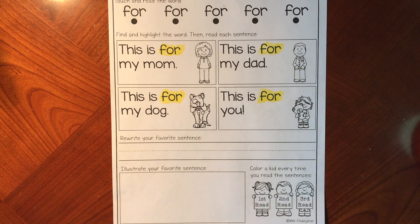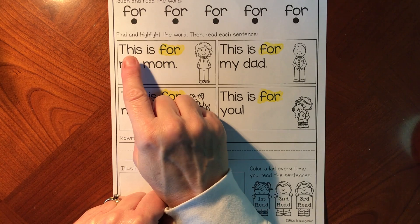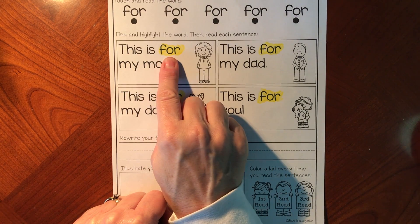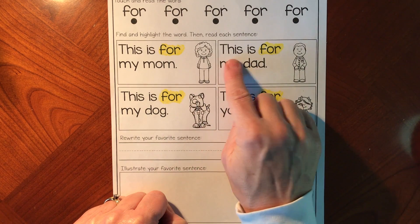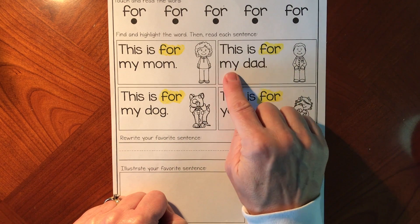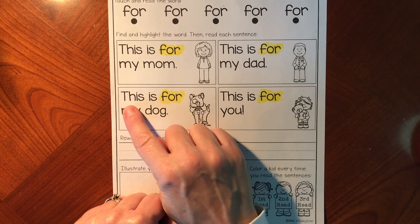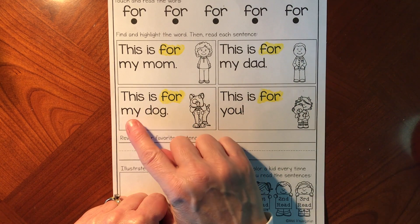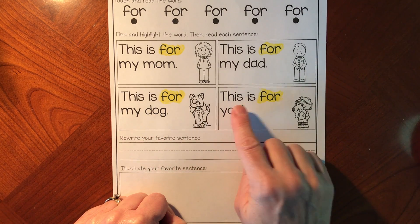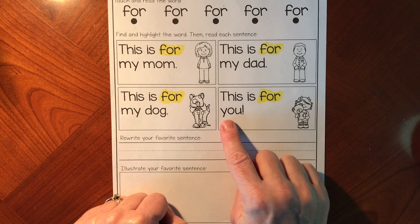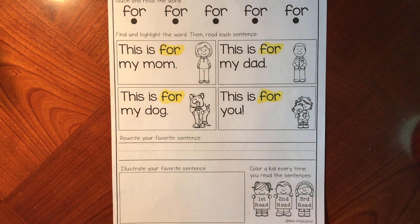Let's see if we can figure out each of the sentences. Remember, this is the sight word 'this.' This is for my mom. This is for my dad. This is for my dog. This is for you. Oh wow, a teddy bear. How nice.